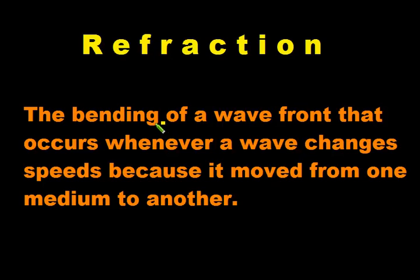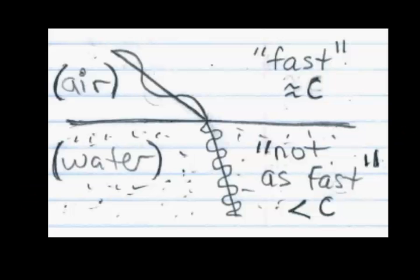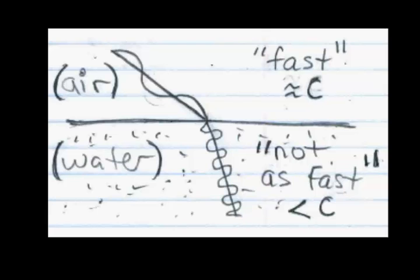Refraction. Refraction is the bending of a wave front that occurs whenever a wave changes speeds because it moved from one medium to another. This is a picture of light moving from air to water. In air it's basically the same as going through a vacuum — light goes at the fastest speed. When it goes to water it slows down, and this causes the light wave to bend.